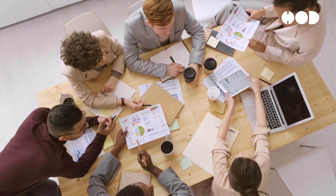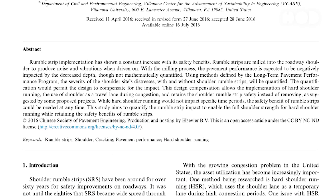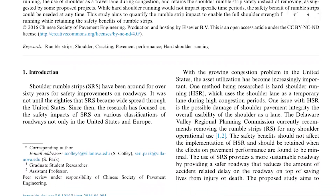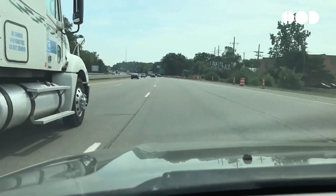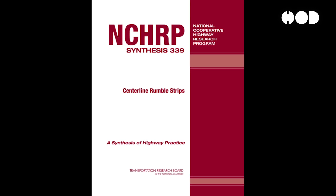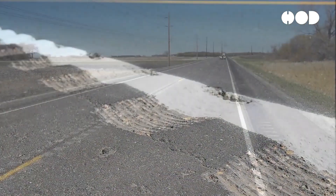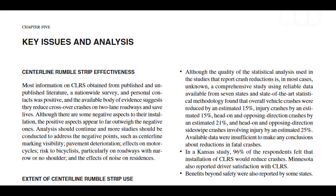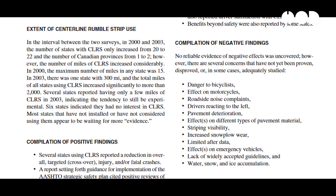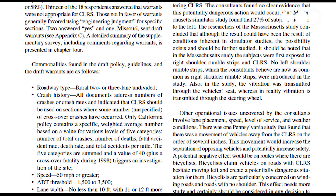Numerous studies have evaluated the effectiveness of rumble strips under various conditions. A study published in the Journal of Transportation Engineering examined shoulder rumble strips and, based on extensive data analysis and crash reconstruction, concluded they significantly reduced the frequency and severity of runoff road crashes, particularly on rural highways with high-speed traffic. Another study by the National Cooperative Highway Research Program, based on real-world crash data and simulation models, found that centerline rumble strips were highly effective in reducing lane departures and crossover crashes, especially on undivided highways and roads with limited visibility.